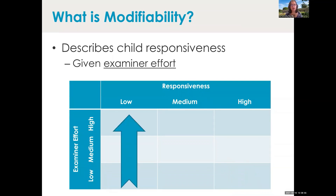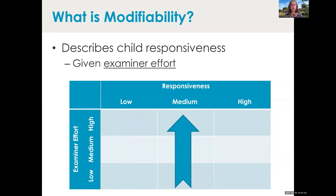Sometimes we have situations where the examiner effort is really high but the child's responsiveness is really low. This is a situation where you work really, really hard and the child has a lot of difficulty no matter what you do, no matter how many hints or supports you give them. This is an indicator of possible developmental language disability. And sometimes we have other combinations.